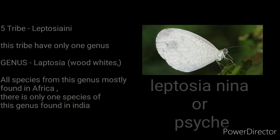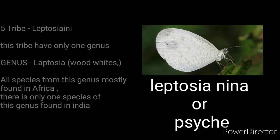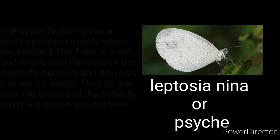The fifth tribe is Leptosiini. This tribe has only one genus called Leptosia, also known as Woodwhites. All species from this genus are mostly found in Africa. There is only one species of this genus found in India, called Leptosia, or the Psyche butterfly.